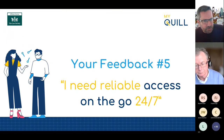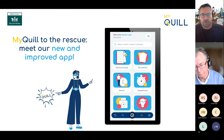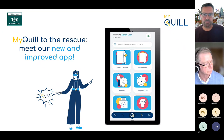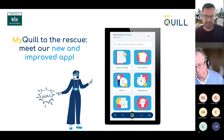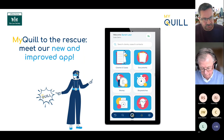Moving on to feedback point five — access to systems on the go. Our world is increasingly going 24/7, and you told us you needed reliable access all the time. We've focused on improving our mobile app, creating new and additional functionality, giving access to time recording on the move, access to documents and financial information. You'll have all the information you need at your fingertips on your phone — case and client details, KPI stats, and business stats. Interestingly, this is available as part of the main Quill subscription at no additional cost.